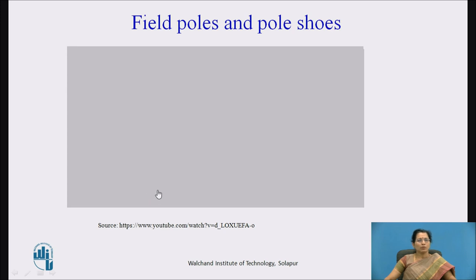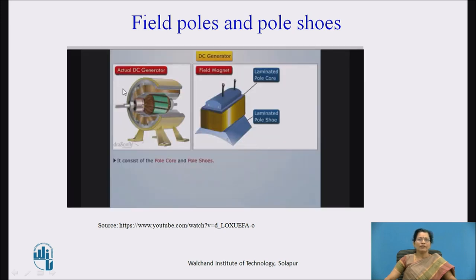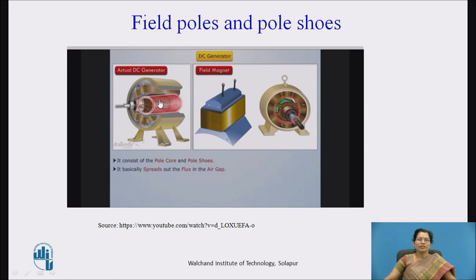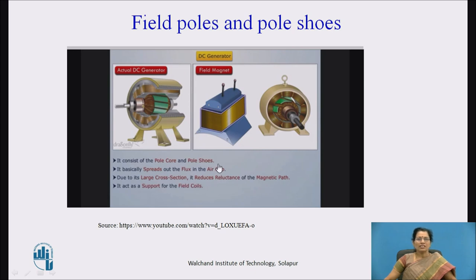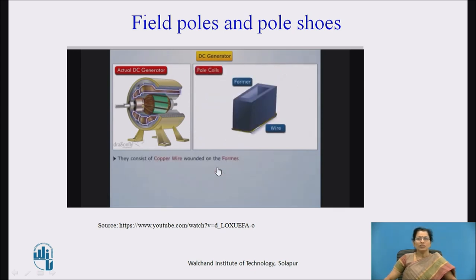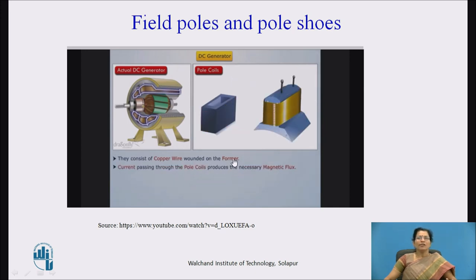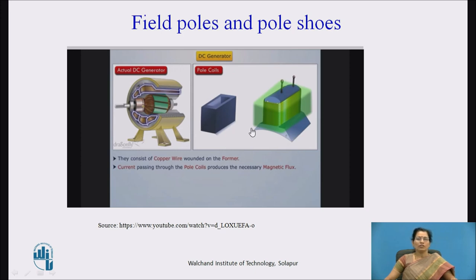Now let us see about the field poles and pole shoes. These are the field poles which create the magnetic field in the machine. This is the core; on that core the winding is placed and a large cross section is provided, giving it low reluctance. When the current flows through that coil, the magnetic field is created around it, and due to the circular shape, that magnetic field is spread out uniformly over the armature core.